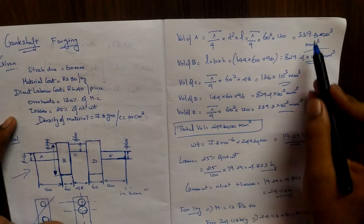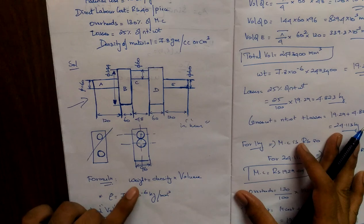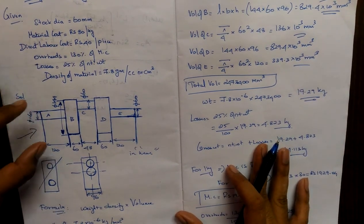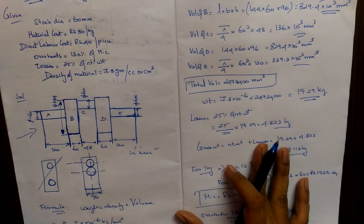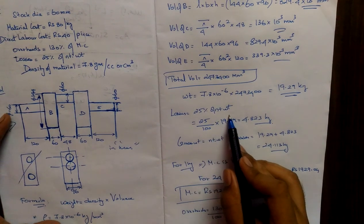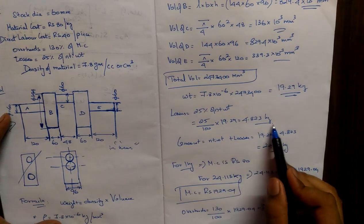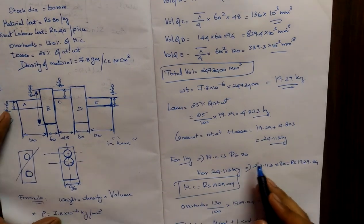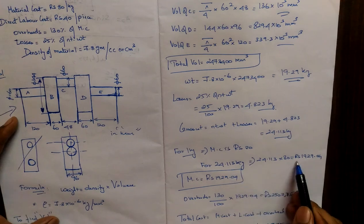Total volume is the addition of all parts A through E. Using total volume and density, we find the weight, which is 19.29 kg — this is the net weight of the completed crankshaft. In forging there are losses, so losses equal 25% of net weight: 25/100 × 19.29. The amount of material lost in forging gives us the gross weight — the total material required.